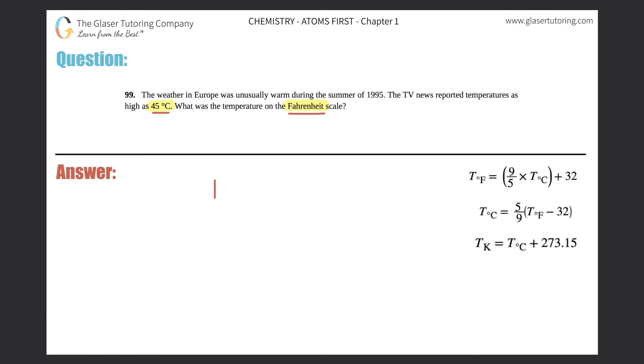So we have 45 degrees Celsius and we want to convert to Fahrenheit. Which formula are we going to use? On the right hand side we're looking for Fahrenheit, so we need to have something that says Fahrenheit equals, which is this one. And this is the one that corresponds between Fahrenheit and Celsius. The T stands for temperature, so it's just those temperatures in Fahrenheit and Celsius.